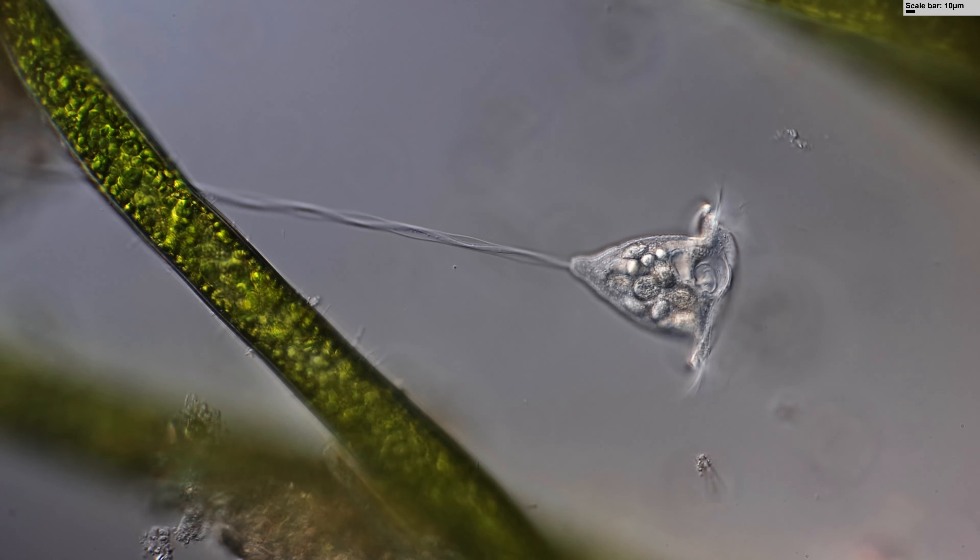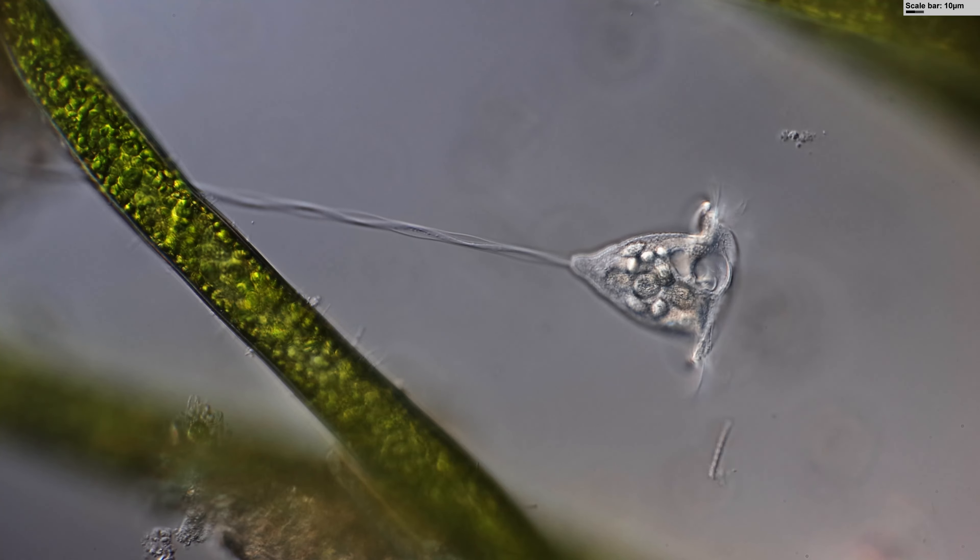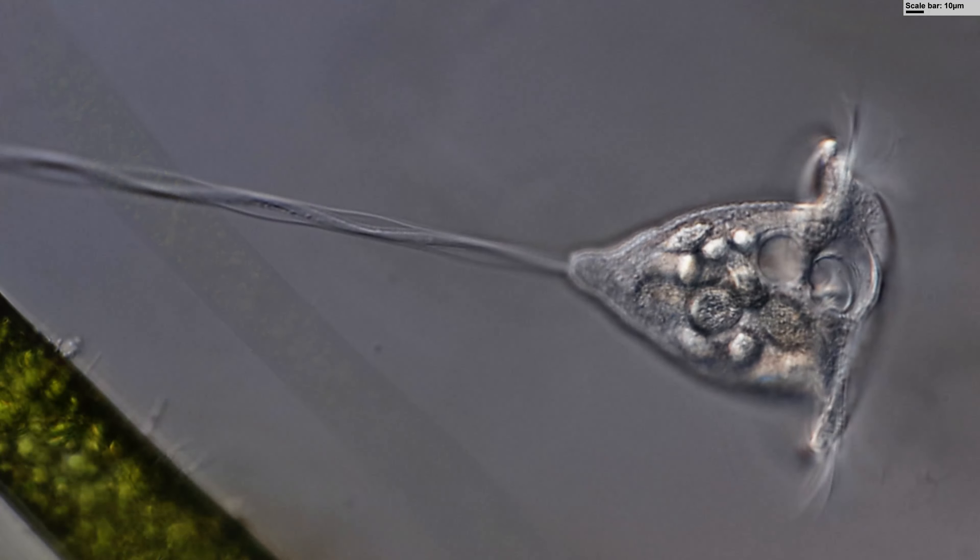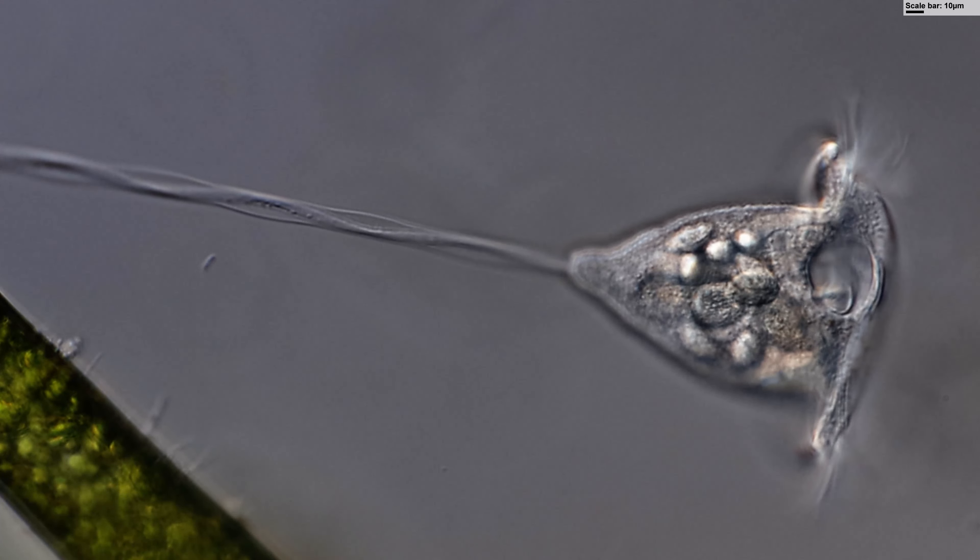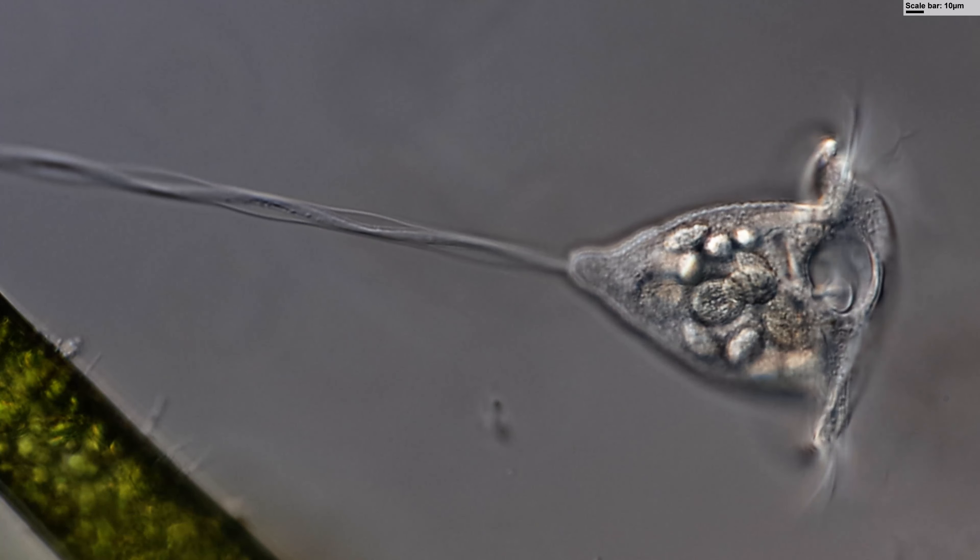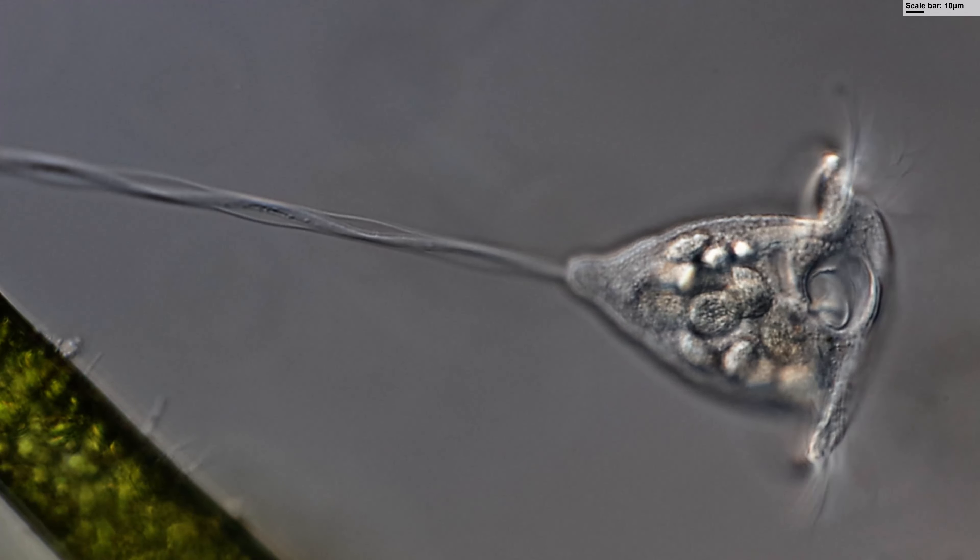Those algae are a good place for vorticella to attach to, and this is one of those nice beautiful specimens that are found. Being a heterotroph, those vorticella of course consume a large amount of oxygen as well—oxygen that the algae and other water plants provide.